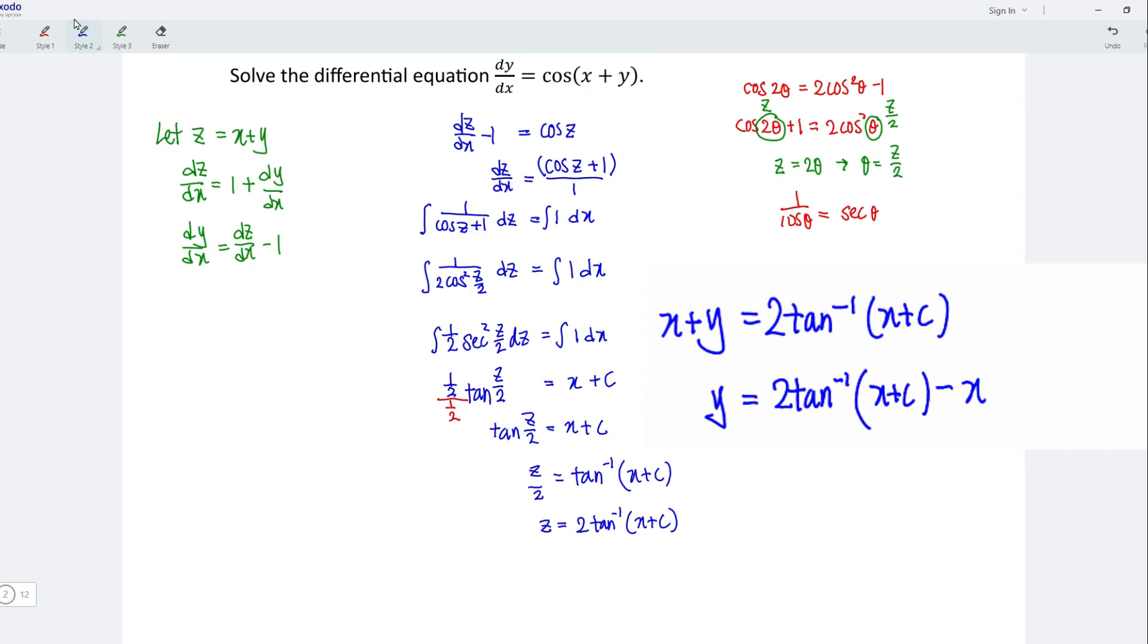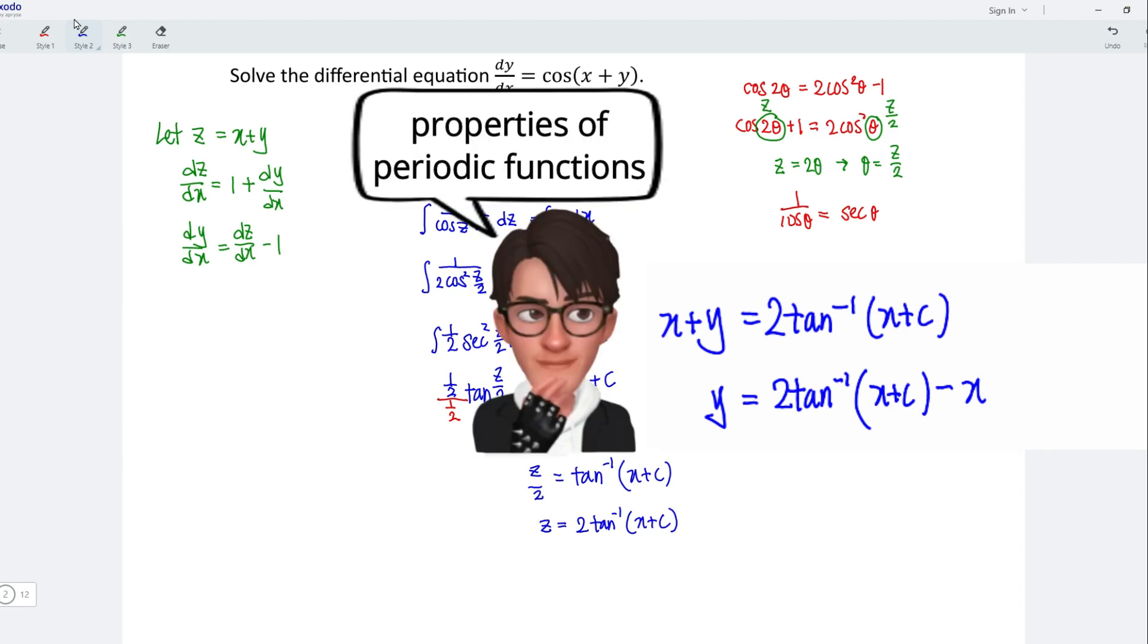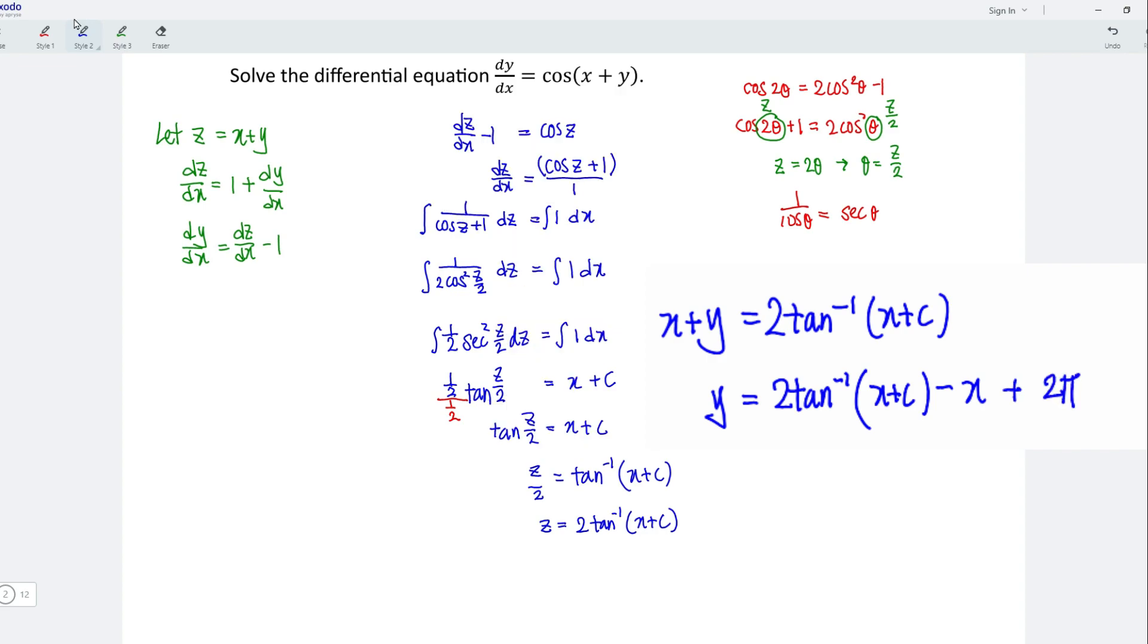And don't forget y is the angle of a trigonometric function. And this, we should obtain exactly the same value for every 360 degrees or equivalently 2 pi. Therefore, we should plus 2 pi multiplied n where n is any integer to indicate every 360 degrees.